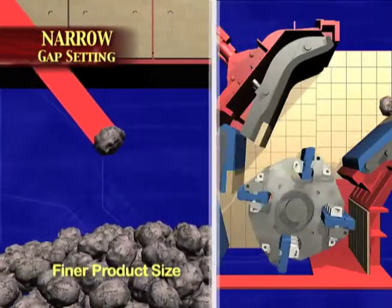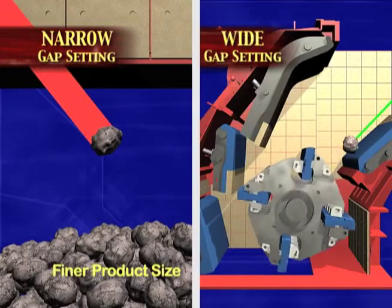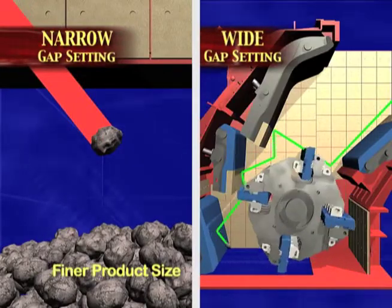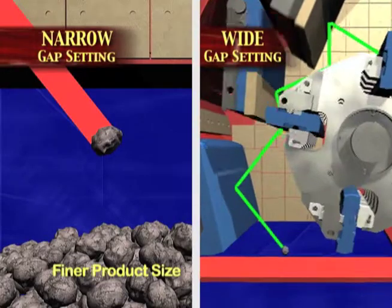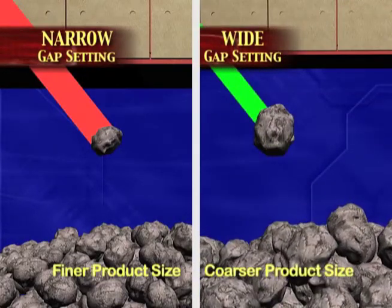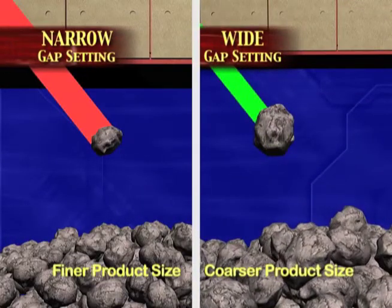A large gap setting reflects the material back to the turning rotor fewer times, resulting in a lower crushing degree and a coarser product size.